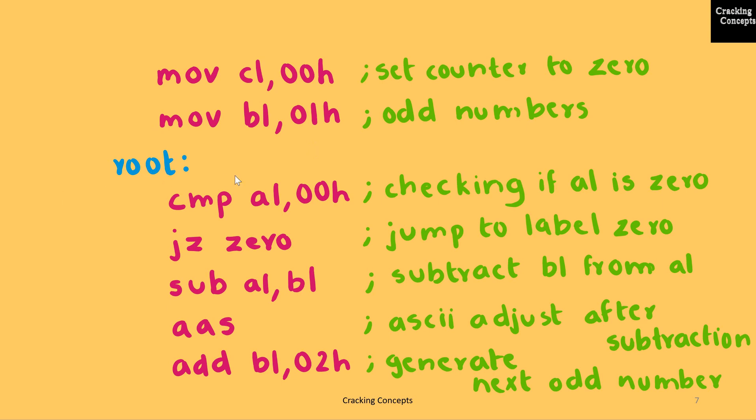Then I'm using a label called ROOT in order to mark the portion of the code where I'll be doing the calculation. There, the first step is to compare the value of AL and see if it is 0. If the value is 0, we'll perform a jump to the label marked as ZERO. This jump is performed on the basis of the value of the zero flag.